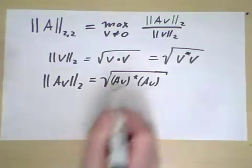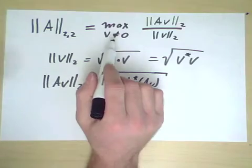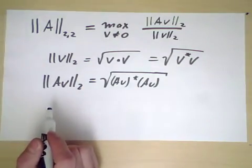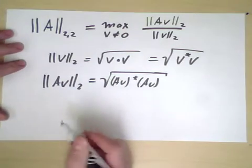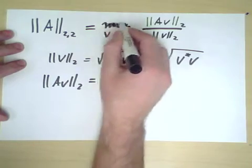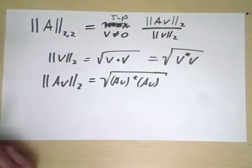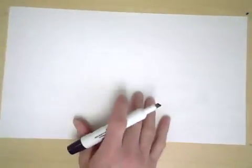Now, you might object that this really shouldn't be a max. This should in fact be some sort of supremum. And that's certainly valid because this is an infinite set. But we know that if we can get the same value from a compact set, then the maximum actually exists. So maybe this is a supremum, properly speaking. But here we'll make a quick argument that it doesn't matter if you use a supremum or a maximum.